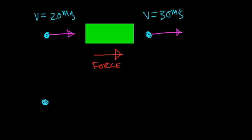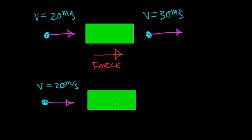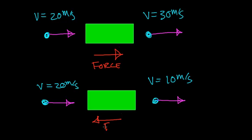Now let's take a look at a second example. We have that same object with an initial velocity of 20 meters per second, moving at constant velocity in a straight line. We send it through a similar box, and when it re-emerges it's again moving at constant velocity — but this time the velocity goes from 20 meters per second down to 10 meters per second, still in a straight line. Something must have happened inside the box to change its velocity. In order for this object's velocity to change, a force had to act on it — in this case, in the opposite direction of motion in order to slow it down. These are two examples of what forces do: they cause objects to speed up or slow down.